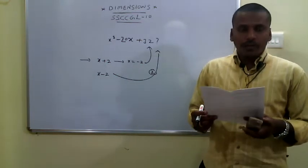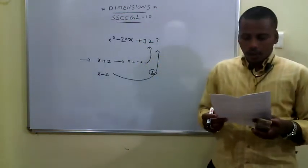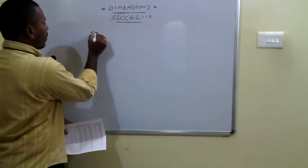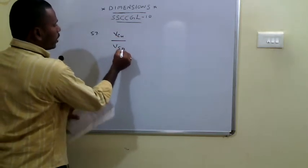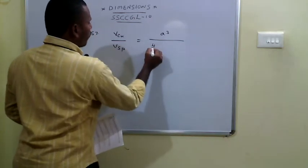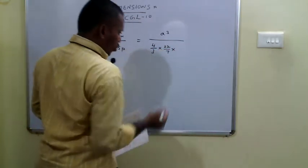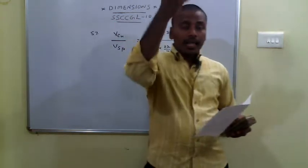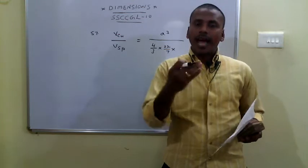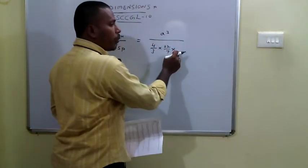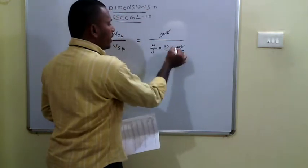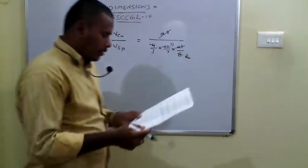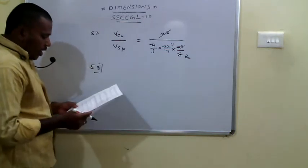The 57th problem: find the ratio of the volume of a cube to the sphere that fits inside it. Volume of cube = a³; volume of sphere = (4/3)π r³. Since the sphere fits inside the cube, the diameter equals the edge a, so r = a/2, giving r³ = a³/8. Simplifying the ratio, you get 21:11.